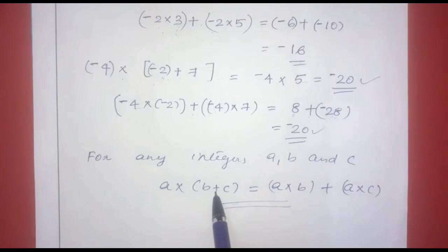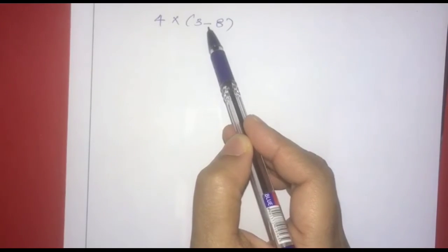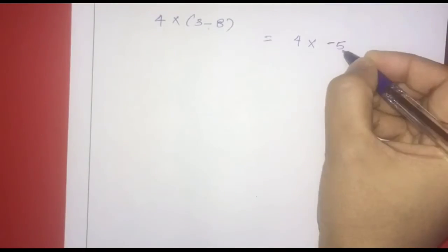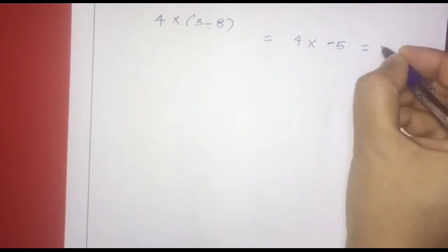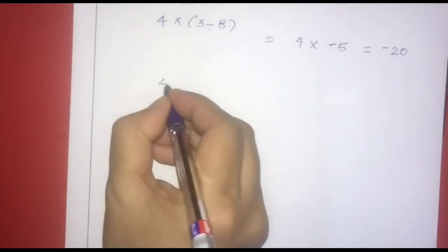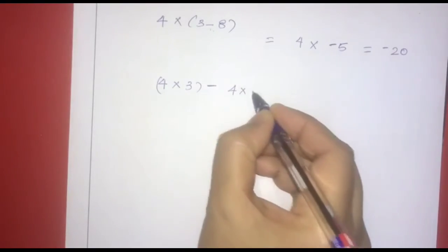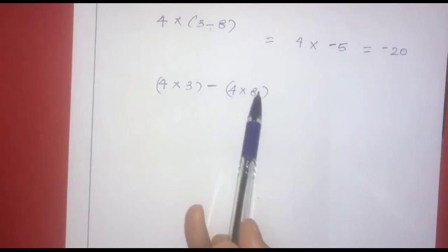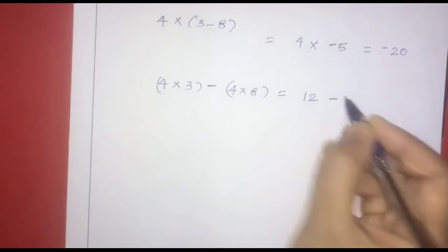Now let's check the distributive property over subtraction. For example, 4 into (3 minus 8). First, 3 minus 8 equals negative 5, and 4 into negative 5 is negative 20. Distributing: 4 into 3 minus 4 into 8 equals 12 minus 32, which also equals negative 20.